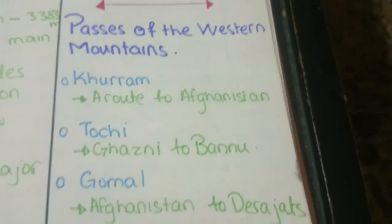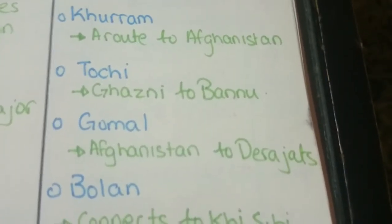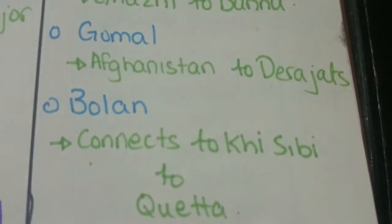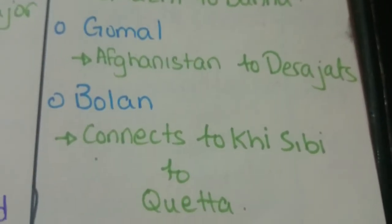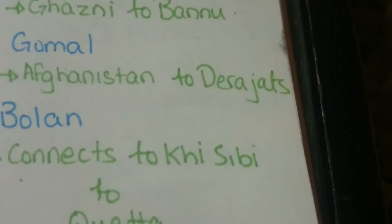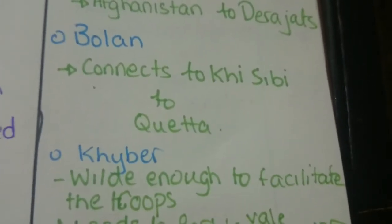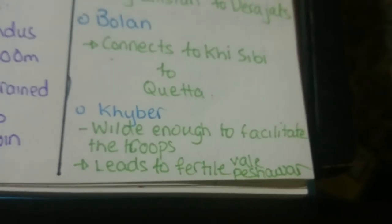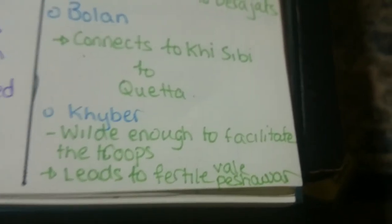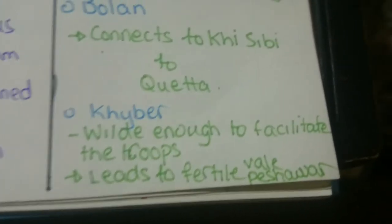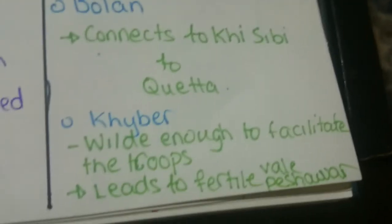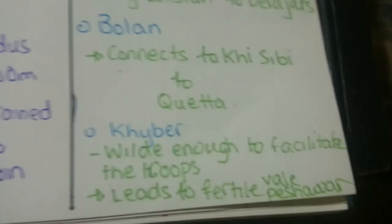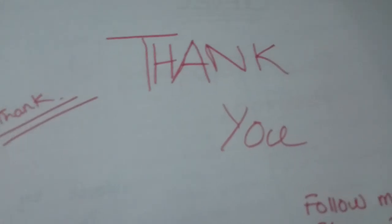Kuram is a route to Afghanistan. Tochi is a route from Ghazni to Bannu. Gomal is a route from Afghanistan to Dera Ghazi Khan. Bolan connects Karachi and Sibi to Quetta. Khyber Pass is wide enough to facilitate troops and leads to the fertile Vale of Peshawar.